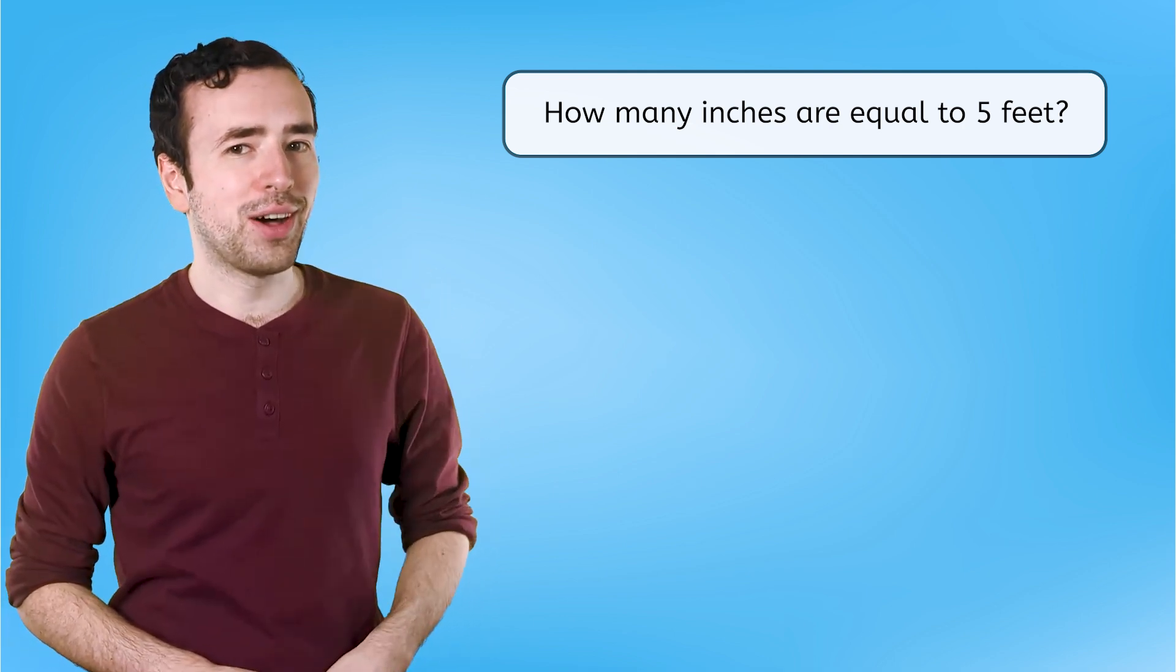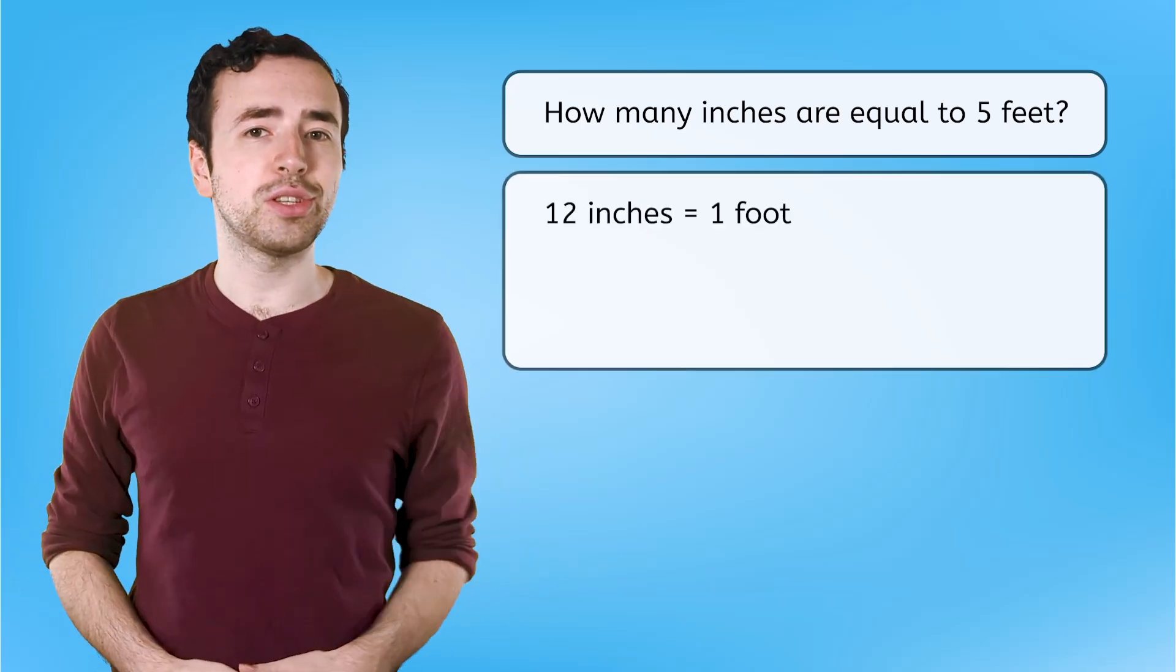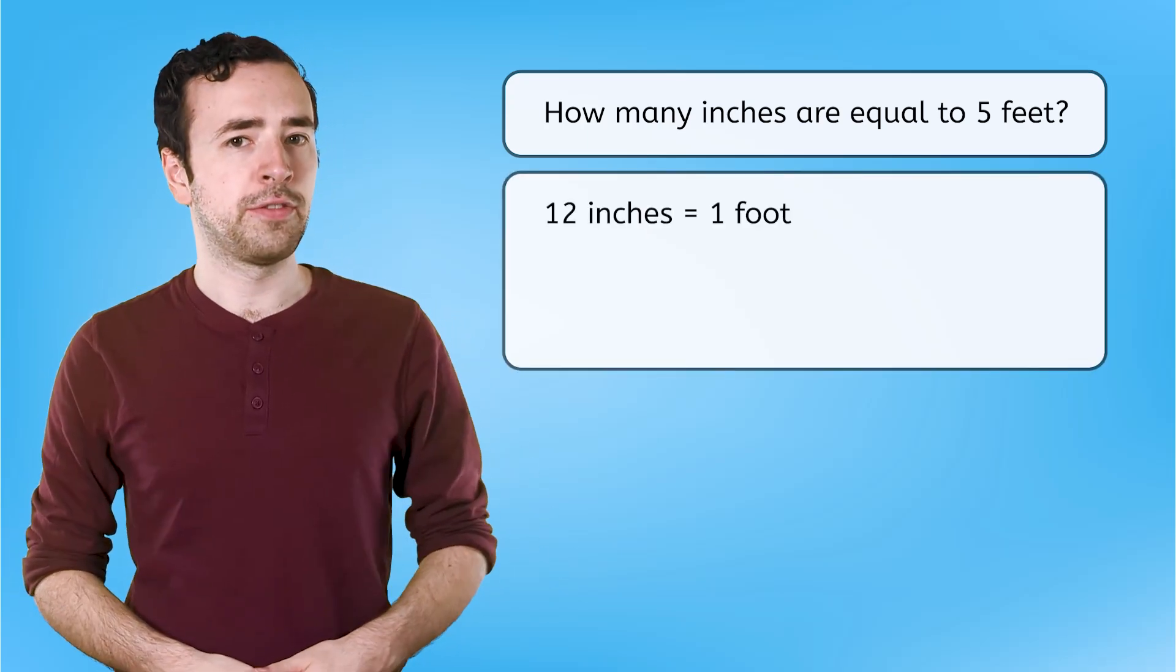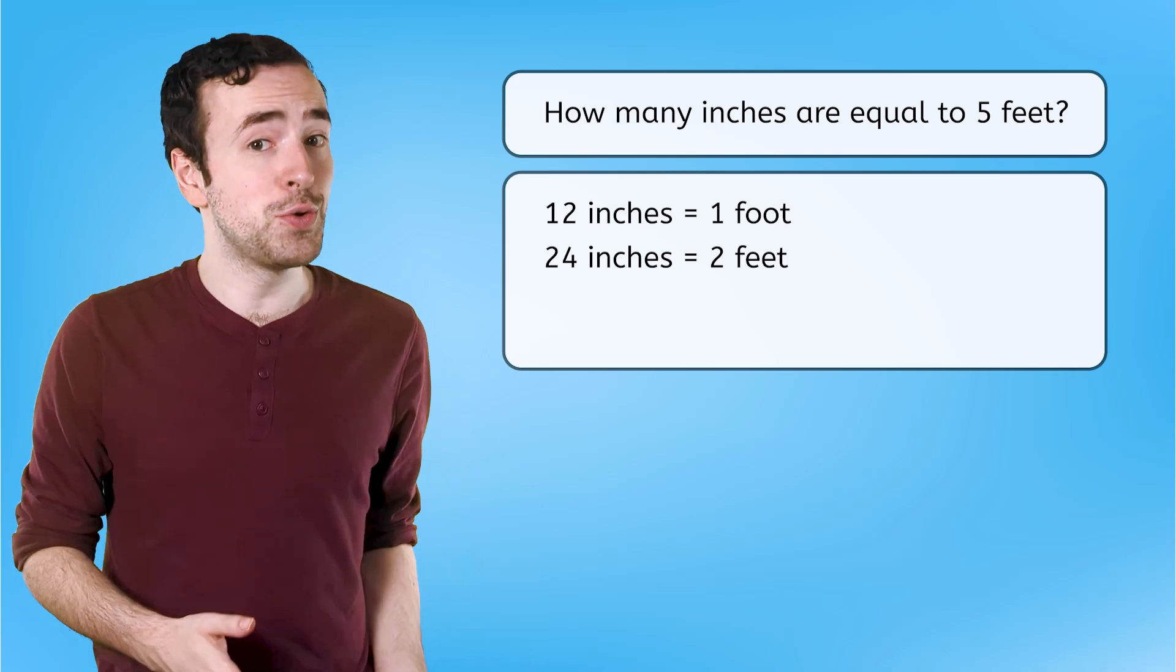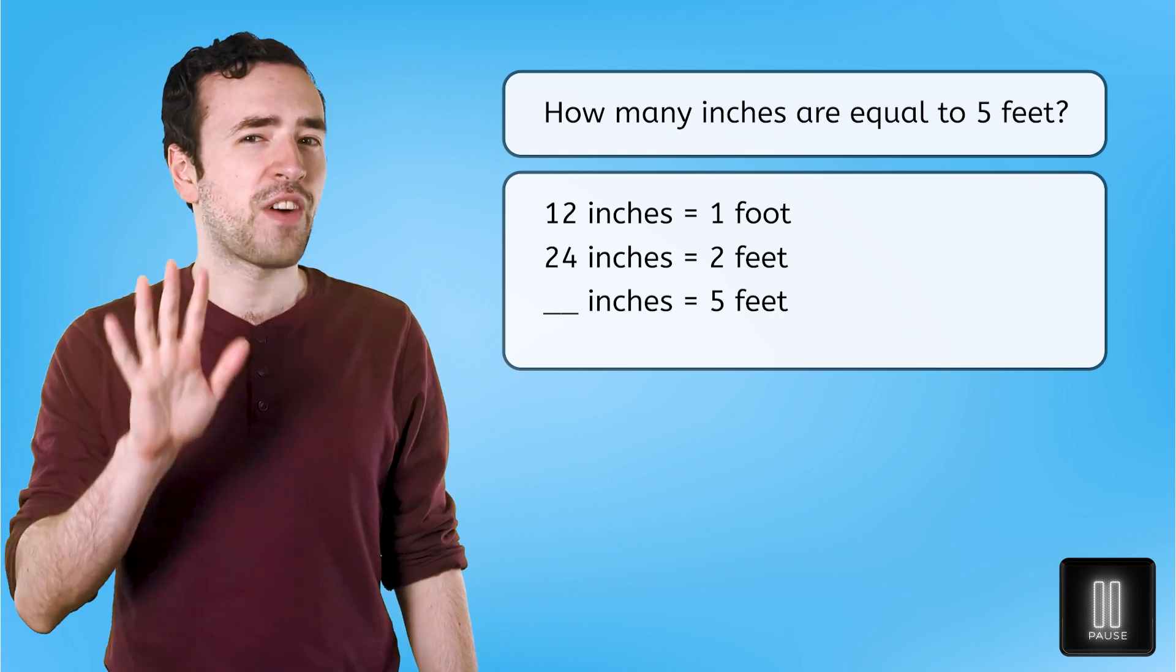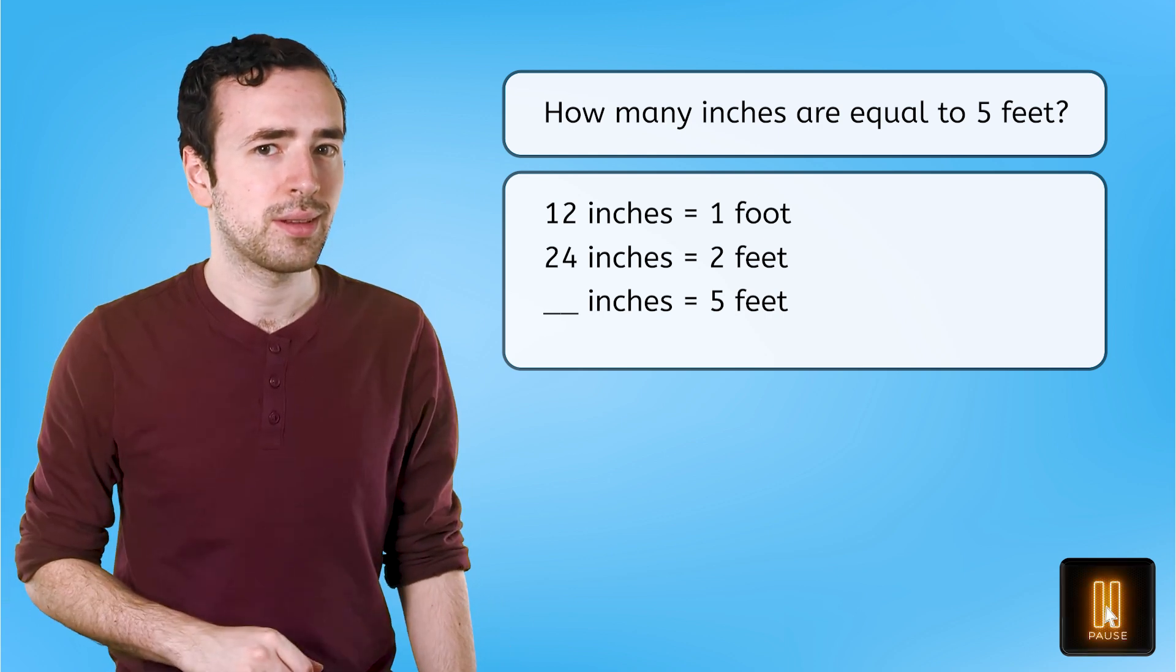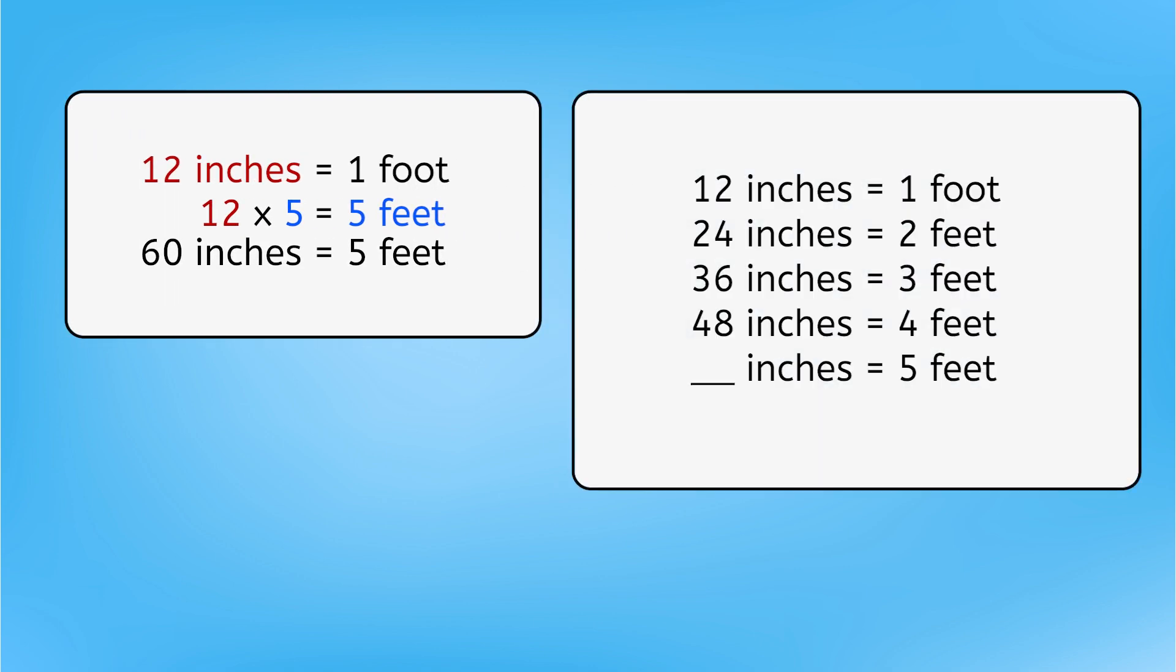Just like when we were working with volume, we can use patterns or multiplication. 12 inches is the same as 1 foot. That means 24 inches is the same as 2 feet. Pause here to figure out how many inches are equal to 5 feet. Multiplying the number of inches in 1 foot by 5 feet equals 60 inches. Completing the growing pattern also proves it's 60 inches.